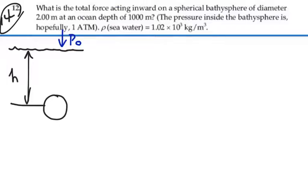And the pressure at that point is equal to atmospheric pressure plus rho g h. And the pressure inside the bathysphere is atmospheric pressure, P-naught.